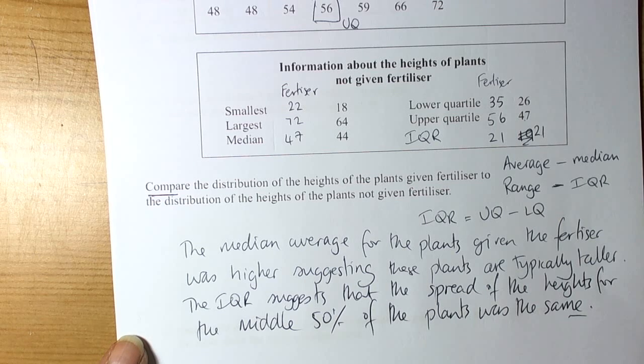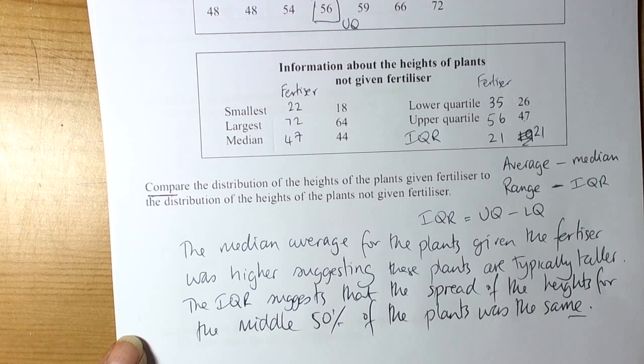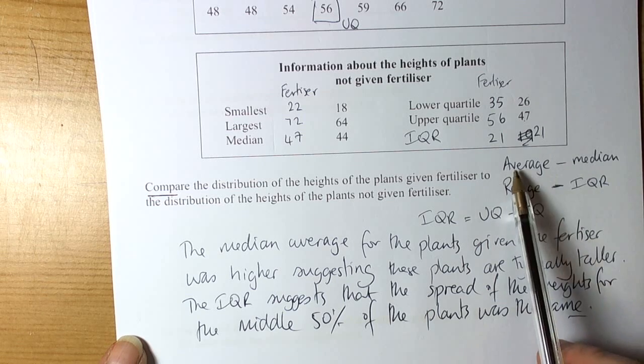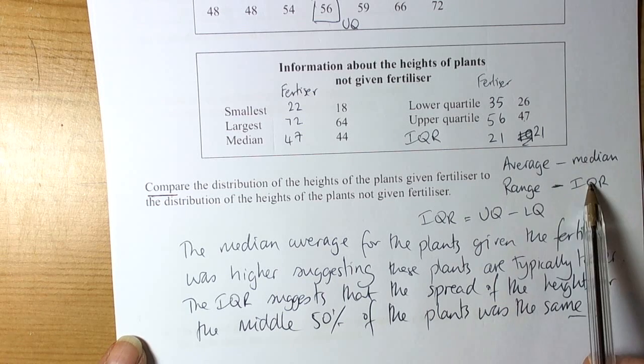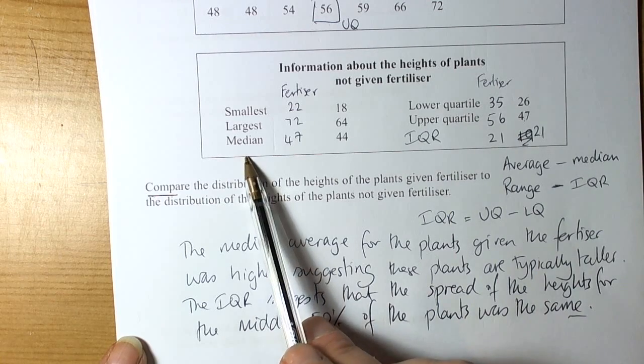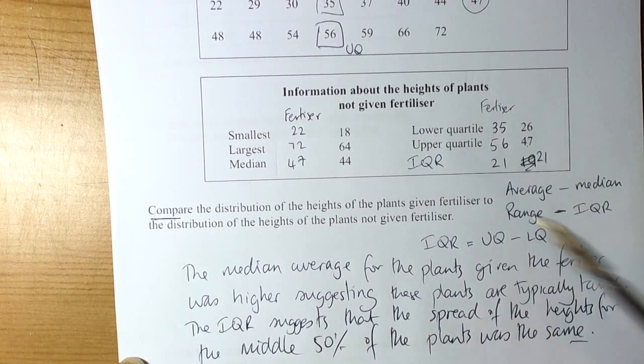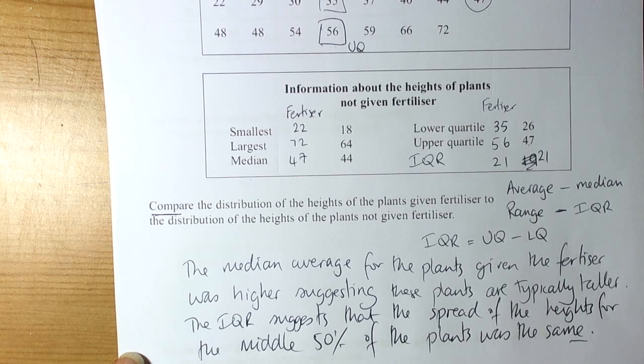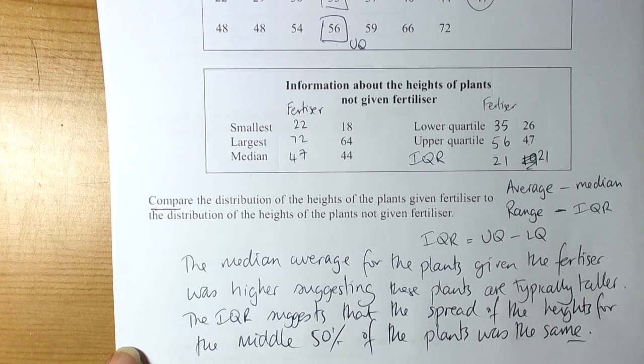That's another example of a comparison question. Always remember that when you're comparing data, you must compare an average and a range. This particular one gave you the hint about the median, but if you had a list of numbers, it could equally be that you calculate the mean average and compare the ordinary range.